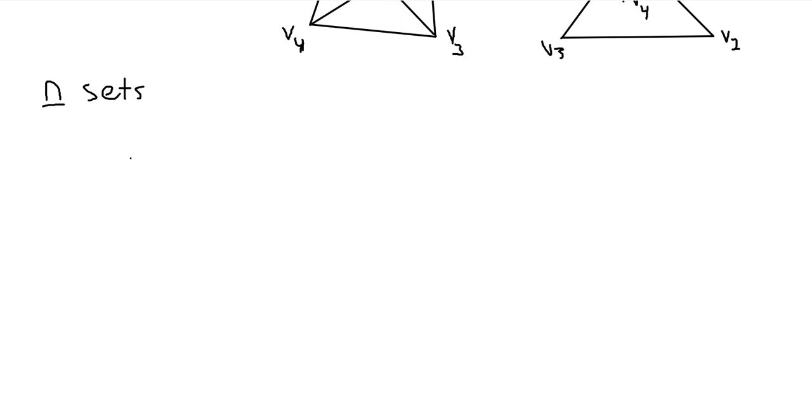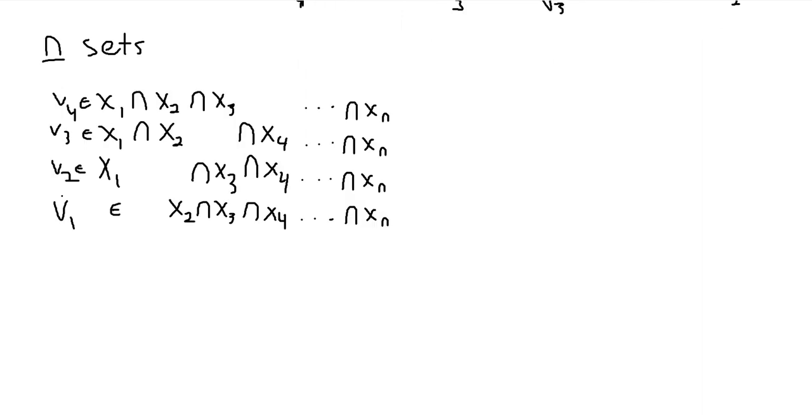If we have n sets, then let's look at the intersections of n minus 1 of them. In fact, we only have to consider four points again. Let's consider four points V1, V2, V3, and V4 again. Here we sort of have the same pattern of intersections, except for V4 we're just not including X4, and so on. We have these sort of vacancies here.